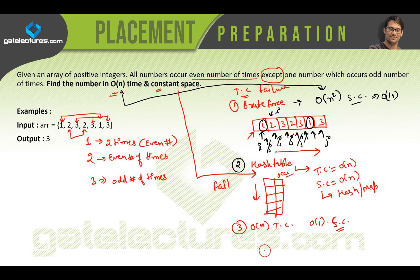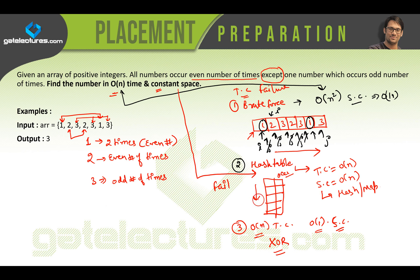The third solution should take O(n) time and O(1) space. For this we are going to use XOR — we take XOR of the elements. Before explaining the XOR solution I will first show how to write a program for the brute force technique, then for the hash table, and then explain how the XOR solution works.